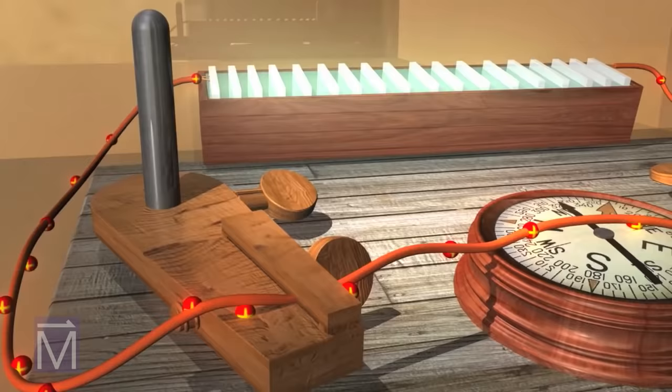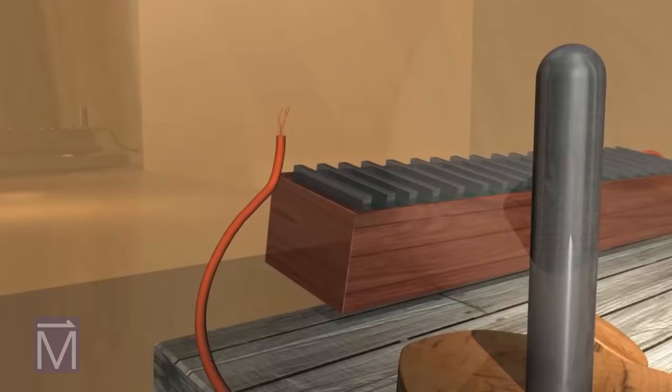As Orsted deduced, this happened because the wire produced a magnetic field around it when it carried a current. If there is no current in the wire, the needle reverts to the alignment with the Earth's magnetic field.